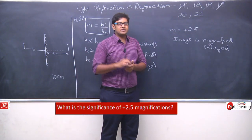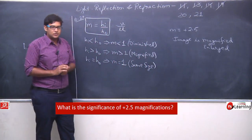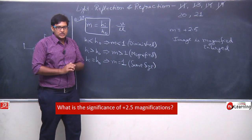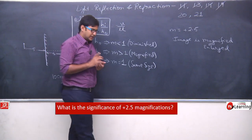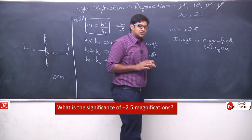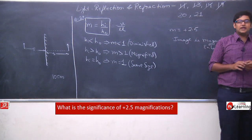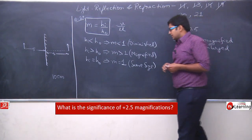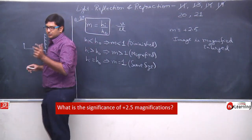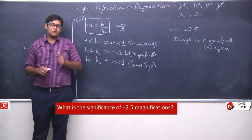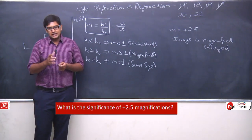Now let us come to the sign convention. We have seen that when a virtual image forms, it is always erect. The sign of the height of the image is the same as the sign of the height of the object. In real images, the image is always inverted, so height of object is positive and height of image is negative.